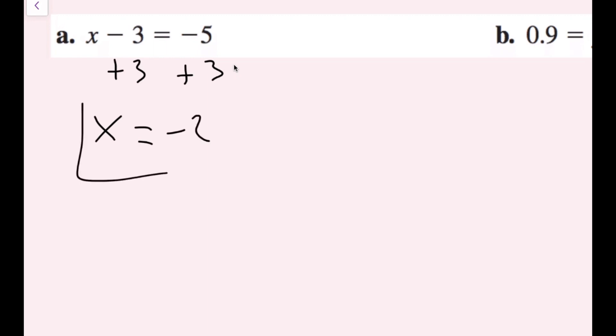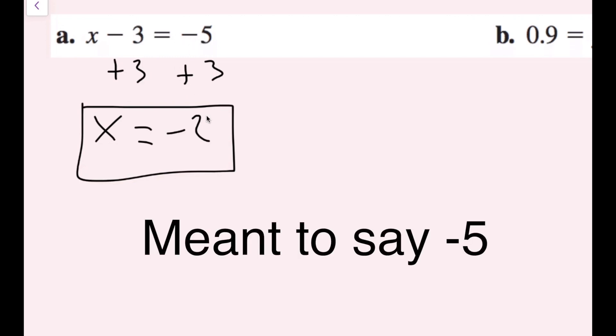And now that I have X alone, this is my answer. I want you to box your answers. And then to check that, you can plug this negative two back in for X. So I get negative two minus three equals negative five, and that is true, so I know that my answer is correct.